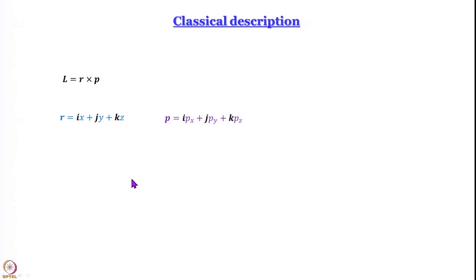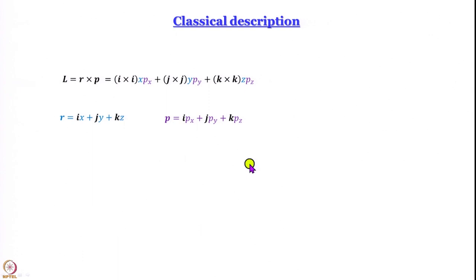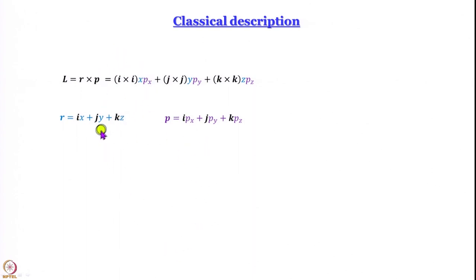When we take the cross product of r and p — that is, (ix + jy + kz) × (ipx + jpy + kpz) — we get 3×3 = 9 terms. The first group contains i×i, j×j, and k×k terms. So i·x × i·px gives i×i multiplied by x·px, and similarly for j×j·y·py and k×k·z·pz.